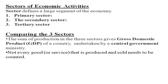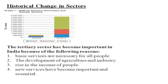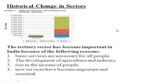GDP measurement is done by the central government. As for historical change in the sectors, in the beginning the primary sector was more important than secondary and tertiary. After that, the secondary sector emerged as the important sector, and in the recent past hundred years we have seen the role of the tertiary sector increasing day by day.